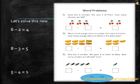Next question: There are 8 orange slices in a plate. Pam eats 3 of them. How many orange slices are there in the plate now? Earlier there were 8 orange slices. Pam ate 3 of them, so we will subtract 3 from 8. In the first box we will write 8, then we will subtract 3. We get the answer 5. There are 5 orange slices in the plate now.